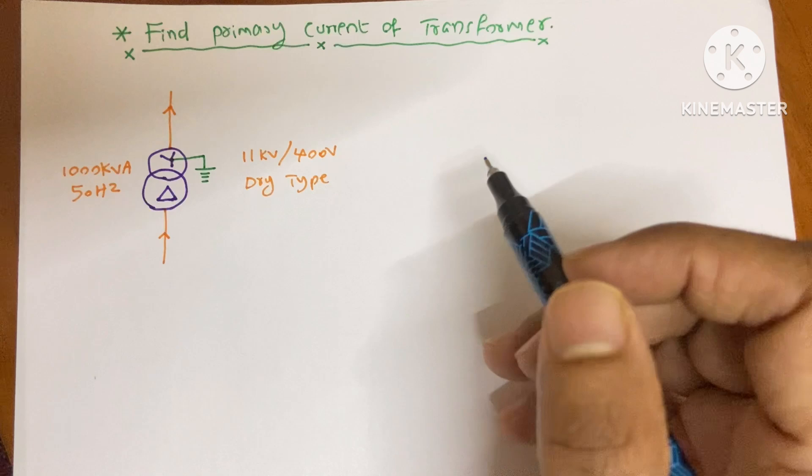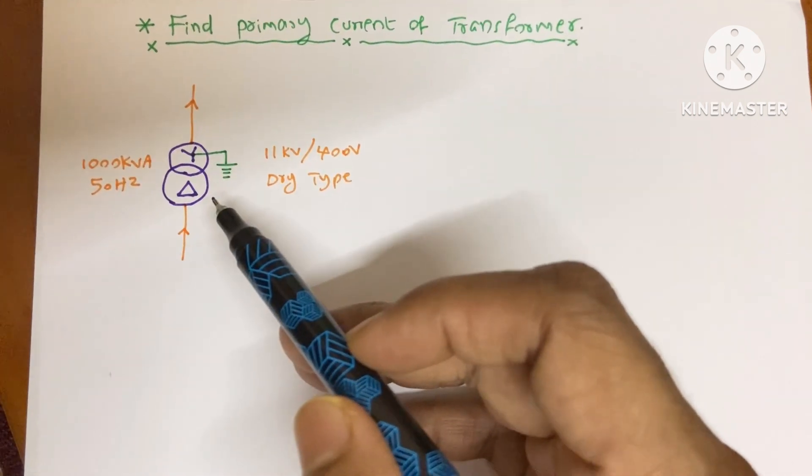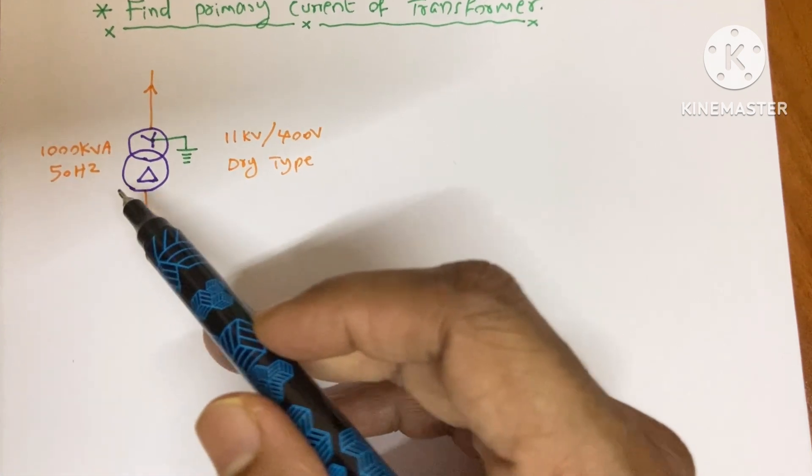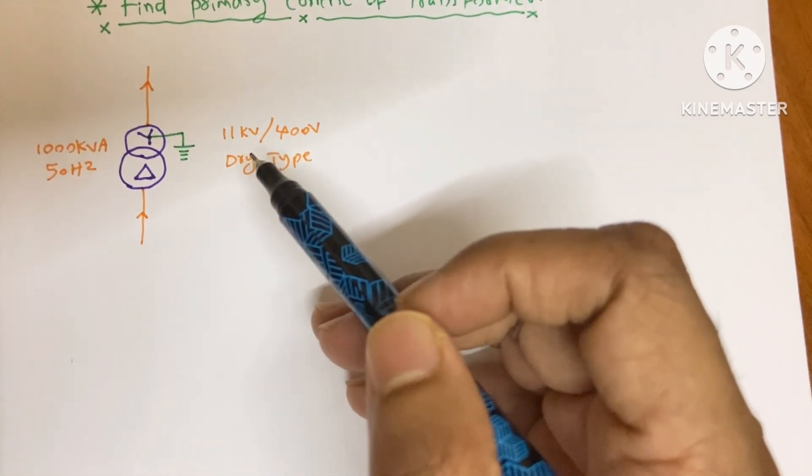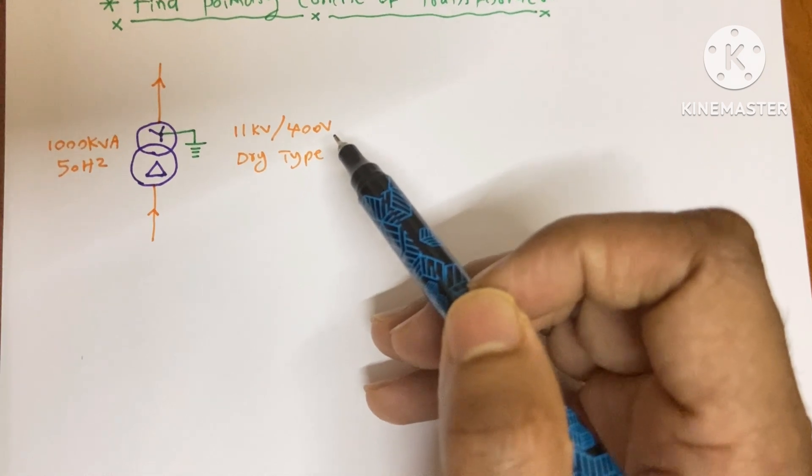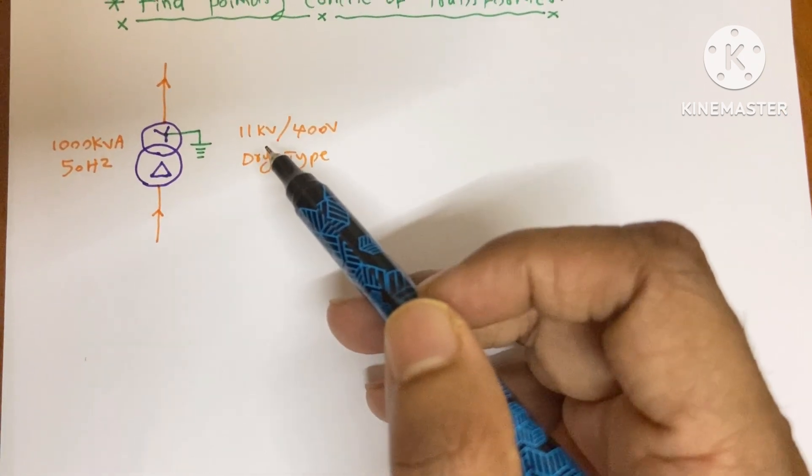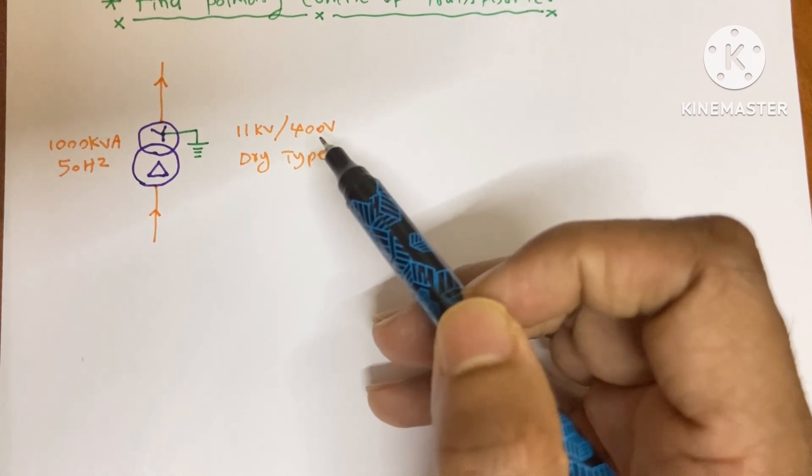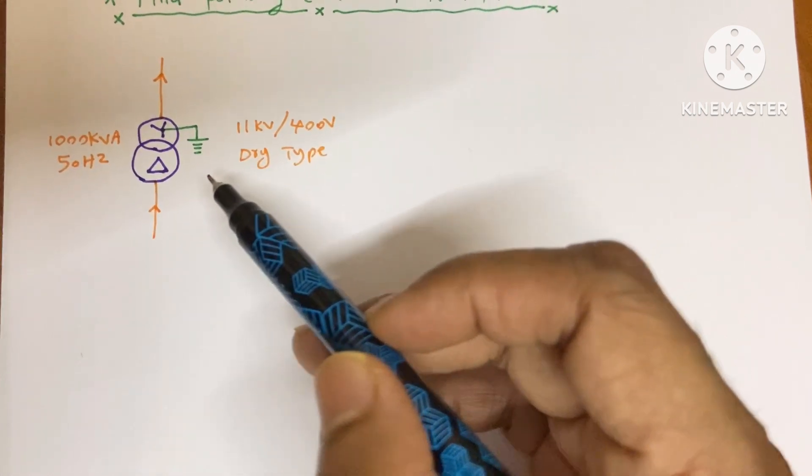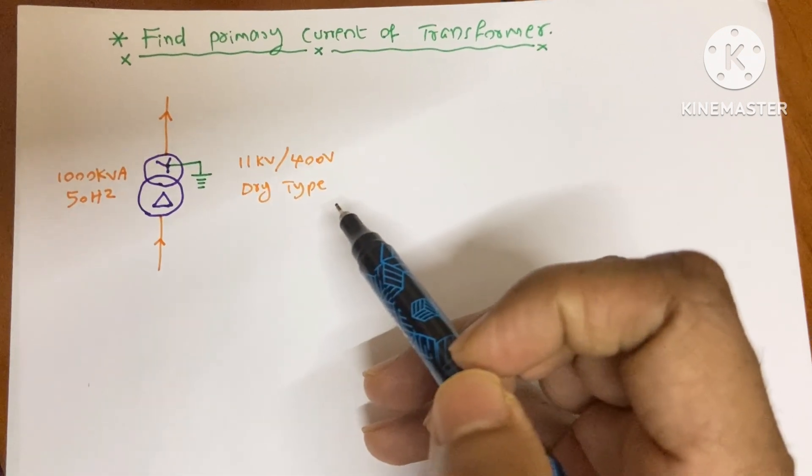Here we have a distribution transformer, delta Y transformer of 1000 kVA, and its voltage is 11 kV by 400 volt. Its primary side voltage is 11 kV and the secondary voltage is 400 volt. It is a step down transformer and it is also a dry type transformer.